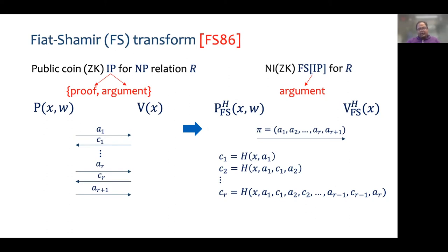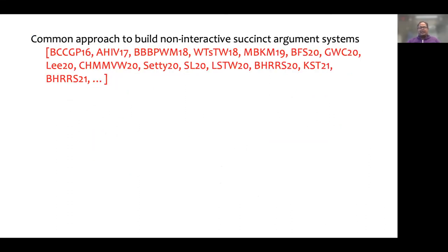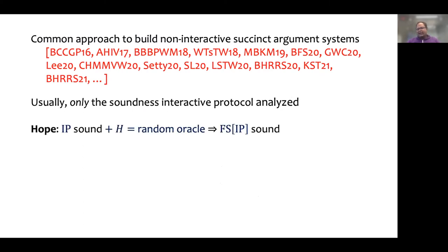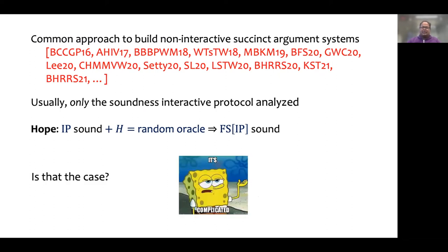If the interactive protocol is zero-knowledge to begin with, then the non-interactive protocol is zero-knowledge as well. Many recently proposed non-interactive succinct argument systems have been designed using the Fiat-Shamir transform. The key point is that the soundness of these protocols is only proved in the interactive setting. And you would think that if the interactive protocol is sound and the hash function is a random oracle, then the non-interactive protocol is sound as well. Unfortunately, the situation here is complicated — it is a fact that most experts in the area know, but it is not very well documented in general.